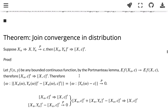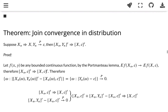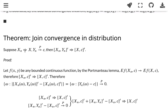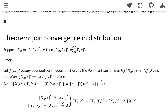The next theorem is about joint convergence in distribution. If we have multiple random variables — one converging in distribution and the other converging in probability — what happens to their joint distribution? In this case it is true: if Xn converges to X in distribution and Yn converges to a constant C in probability, then the joint distribution of Xn and Yn will converge to the limiting distribution (X, C).